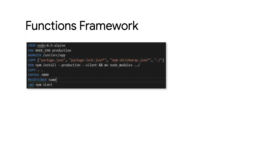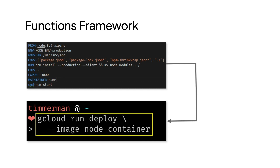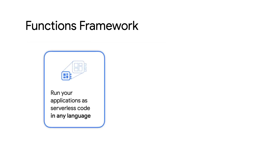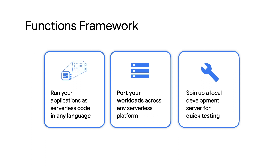Keep in mind, you're not limited to these languages. Any language that can be run in a Docker container can be deployed to Cloud Run. Once you've built your application with the Functions Framework, Cloud Run lets you get your code into production in seconds. Just run a gcloud command to deploy your stateless container, and Cloud Run will do the rest — listen to requests and events, pass them to your code, and scale up and down to meet user demand. With the Functions Framework, you can run your applications as serverless code in any language, port workloads across any serverless platform with an open-source framework and Docker, and spin up a local development server for quick testing.